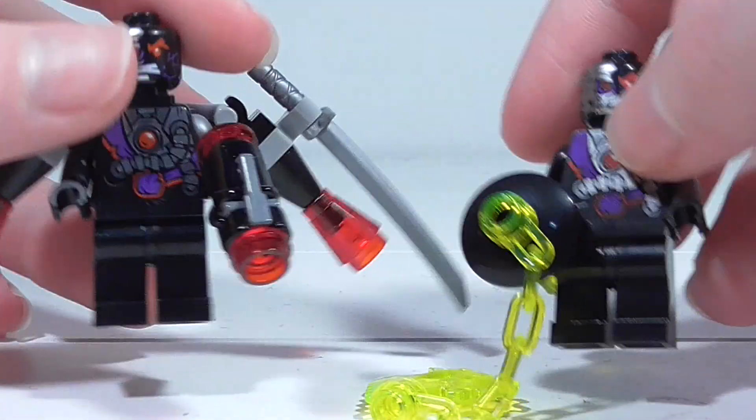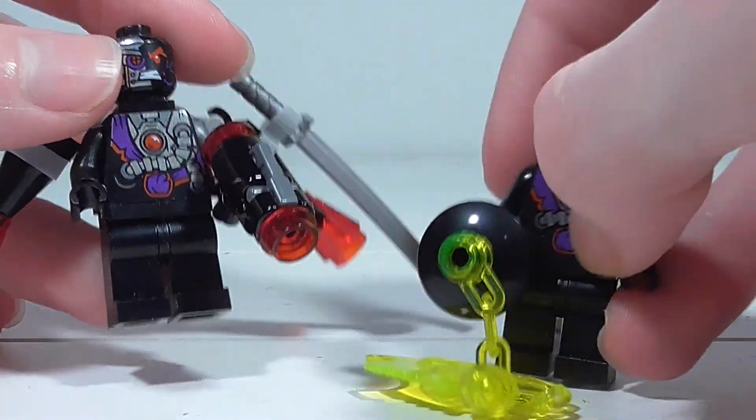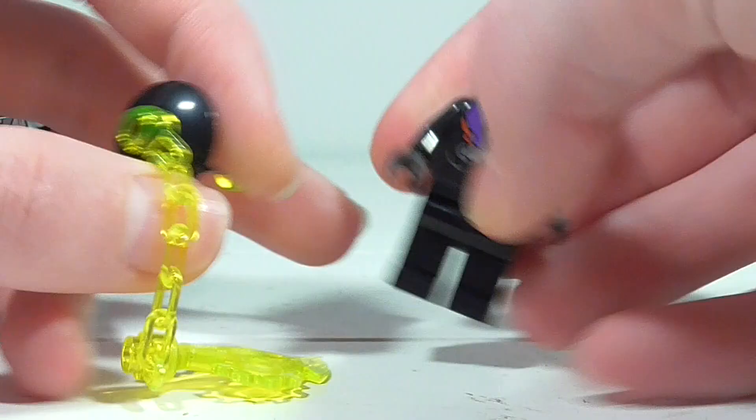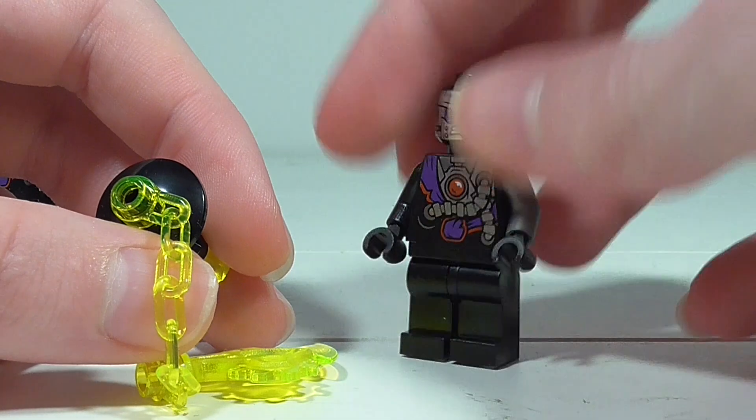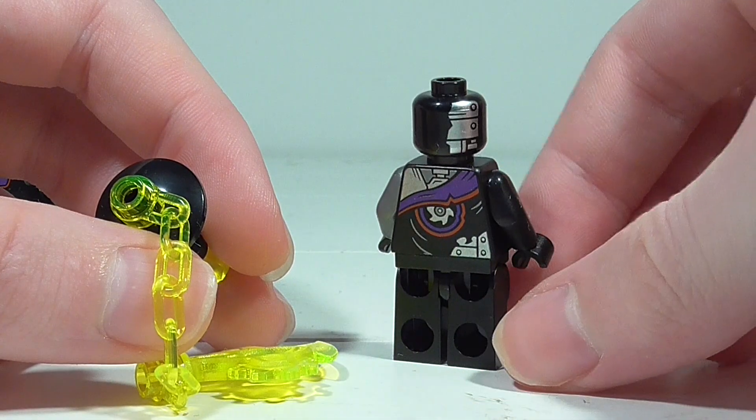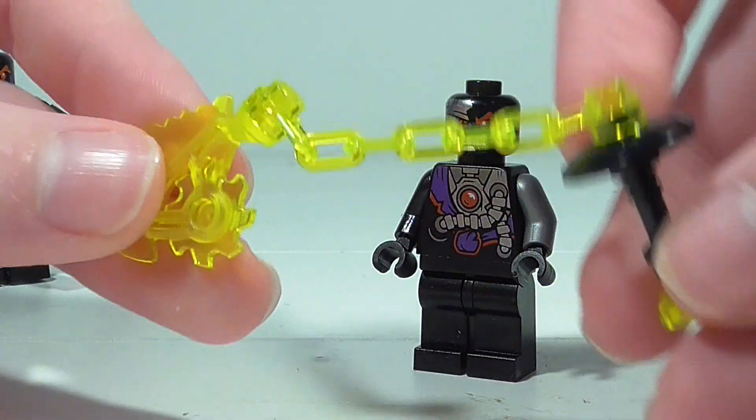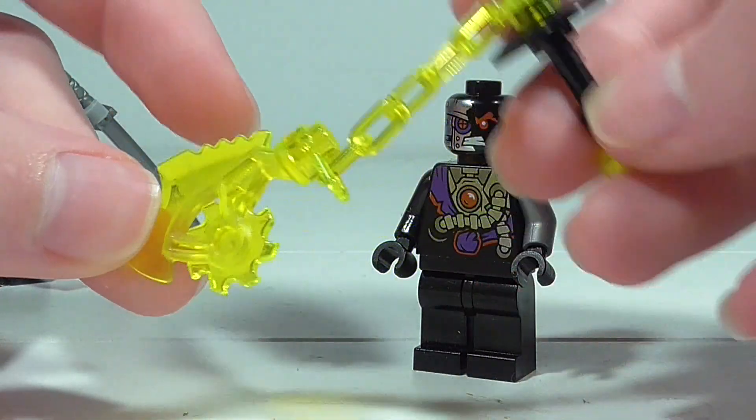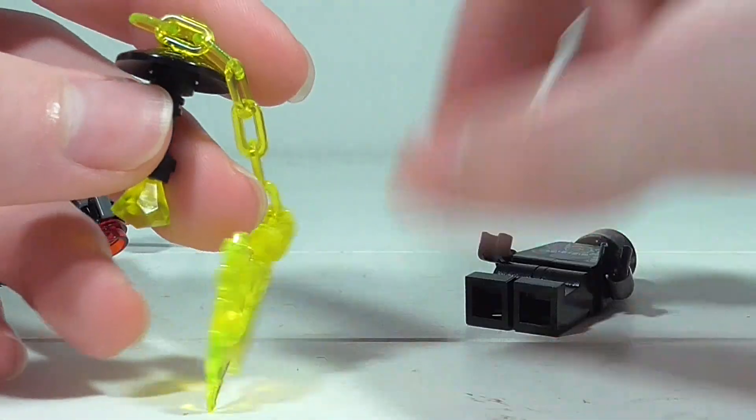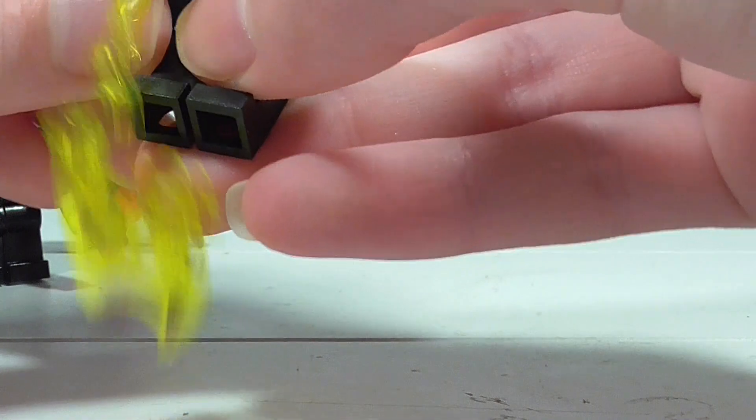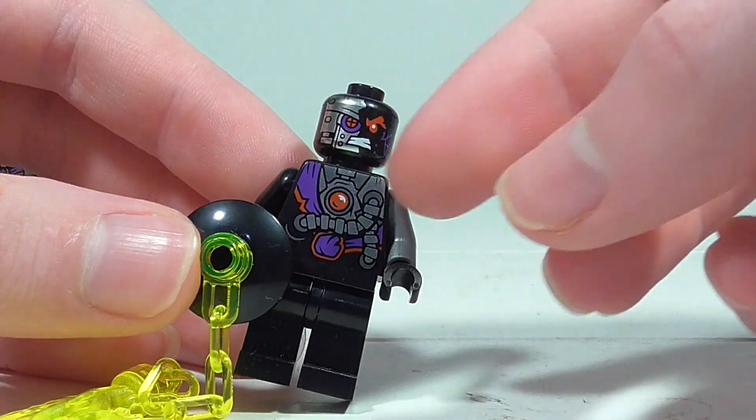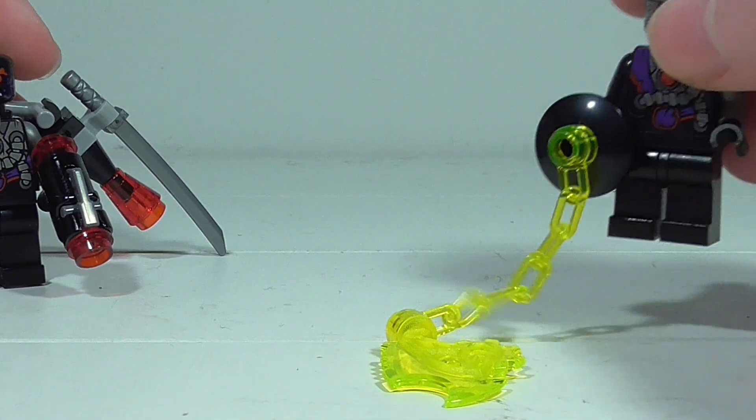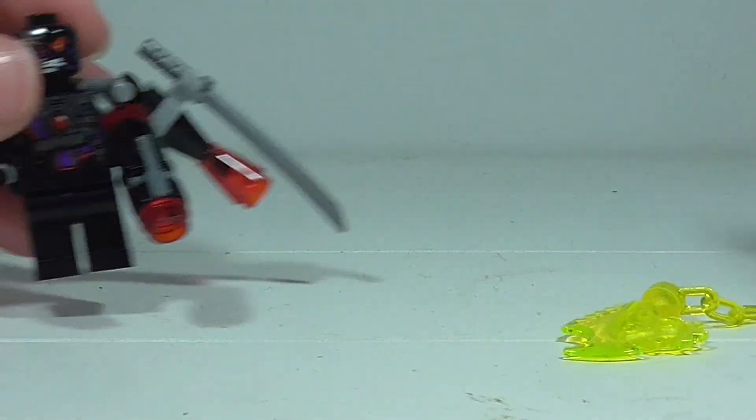And so next up, these two minifigures are exactly the same except the accessories they come with. These are just two generic Nindroids. So as you can see, the torso and face detailing there, they are both the same, and then the back detailing. And you can also see one of them does come with the Technoblade weapon here, which also comes with General Kryptor in the Samurai X cave. And in the Samurai X cave, General Kryptor is just basically one of these Nindroids with extra armor and the helmet on. So there is nothing exclusive to this set about these Nindroids.